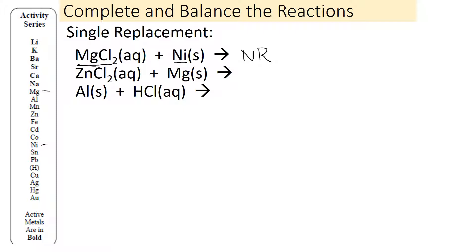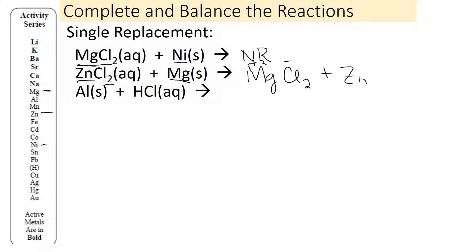The next one, we have zinc and magnesium. The highest one is magnesium — it wants to be in the compound, but it's not, so they're going to have to switch. The magnesium is going to go with the Cl, because you can't put magnesium and zinc together; two metals don't form a compound. We don't necessarily bring the subscript 2 over — we balance it with its partner. Magnesium is +2, chloride is −1, so the compound is MgCl2. Our other product is zinc by itself. That one's already balanced: one zinc, one zinc, two chlorides, two chlorides, one magnesium.